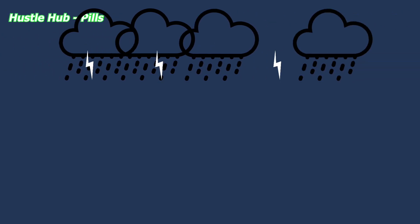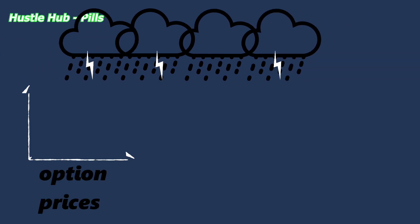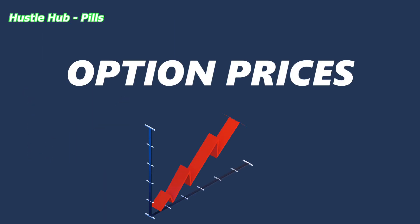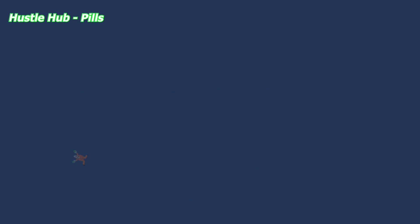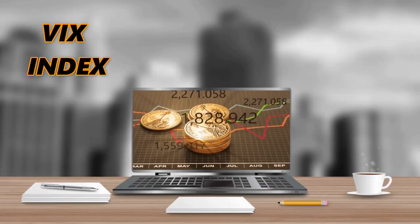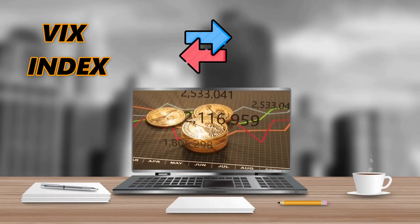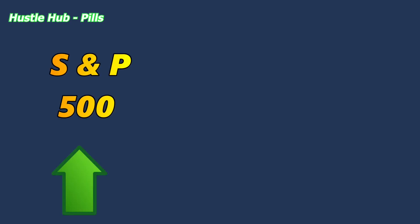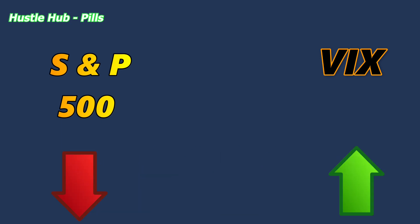In turbulent times, options prices rise because investors need to hedge their position by using options, which makes the options prices increase. Speculators can also be attracted by possibly having good returns on options. Usually the VIX index has the opposite trends compared to the S&P 500. When the S&P 500 is up, the VIX is low. When the S&P drops, the VIX skyrockets.